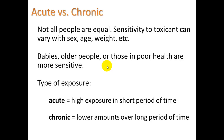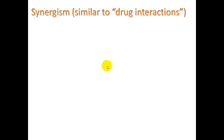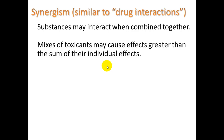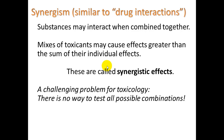We already talked about acute versus chronic exposure. This is also a good time to talk about synergism, which is similar to drug interactions. If you're taking more than one medication, your pharmacist considers how those medications interact in your body. We rarely do this when looking at the effects of environmental chemicals. Some substances together can cause worse effects — one plus one does not equal two; it might equal three or four. These are called synergistic effects. It's a challenging problem for toxicology because there is no way to test all possible combinations.